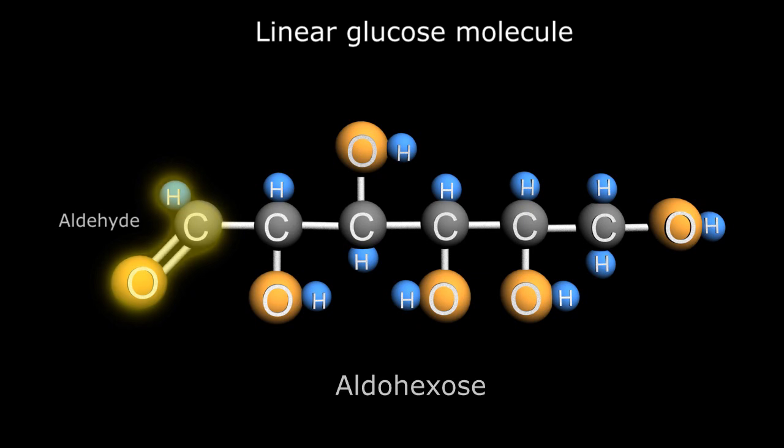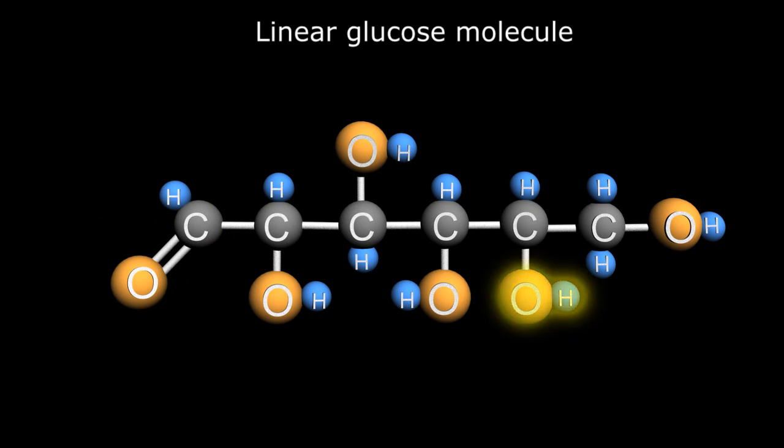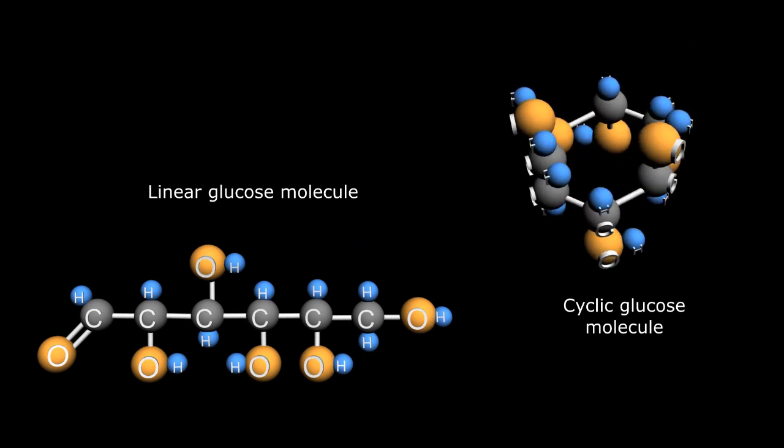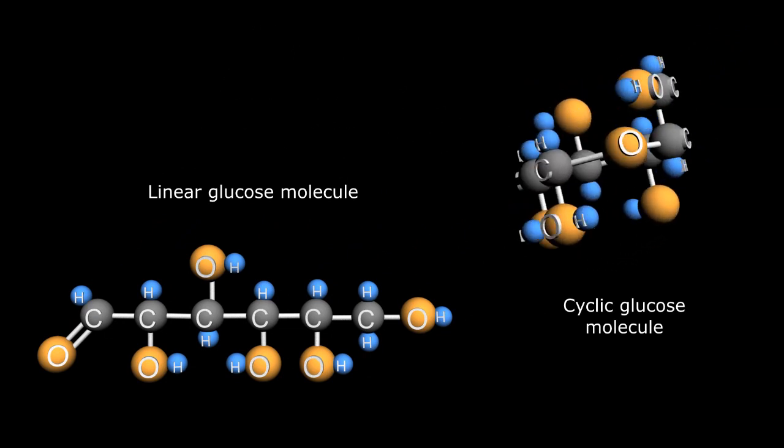To reform the cyclic form of the glucose, we would reverse the steps with the hydroxyl oxygen of carbon 5 attaching to the carbon 1 atom to reform the pyrin ring. And that's it, the linear and cyclic forms of energy storing glucose molecules. Thanks for watching and we'll see you next time.